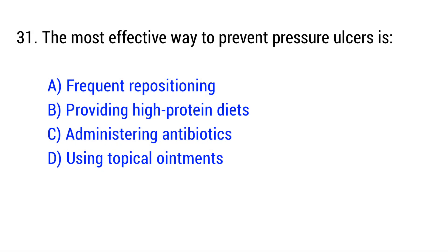Question number 31. The most effective way to prevent pressure ulcers is? The right answer is option A: Frequent repositioning.